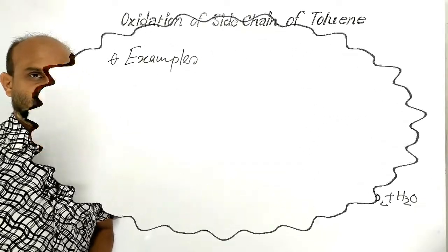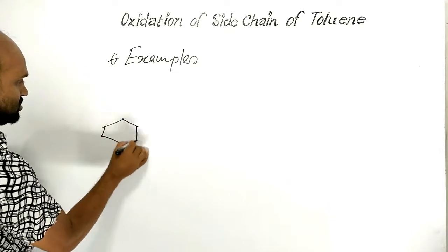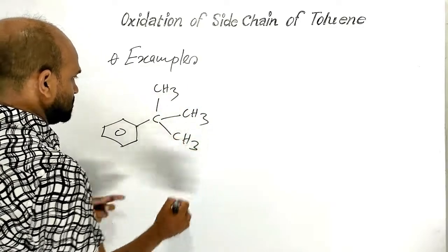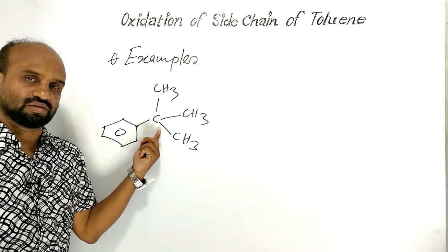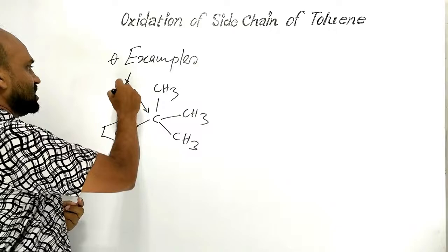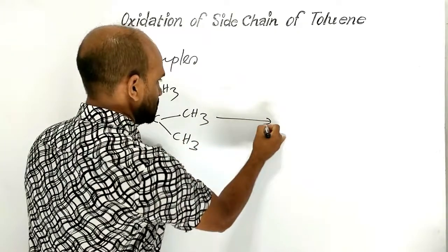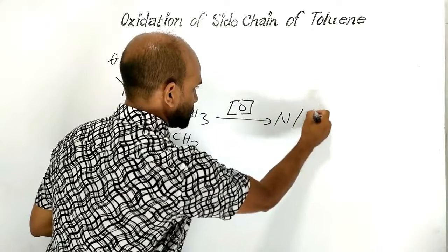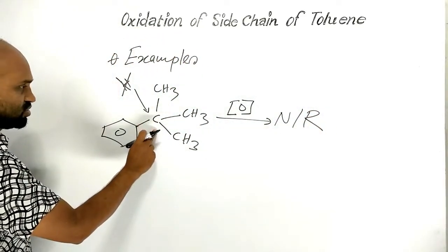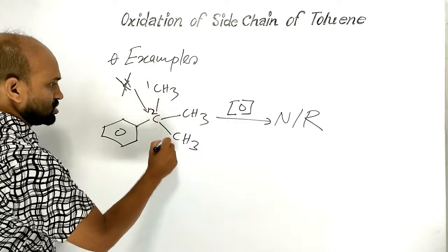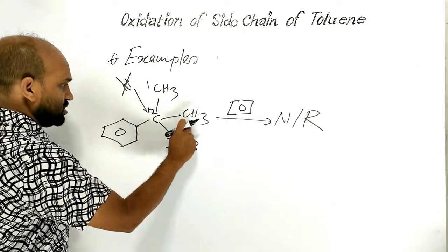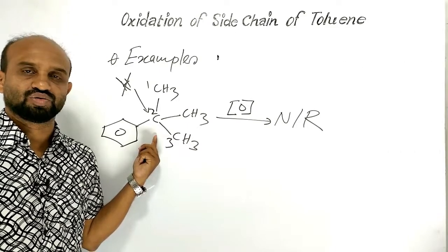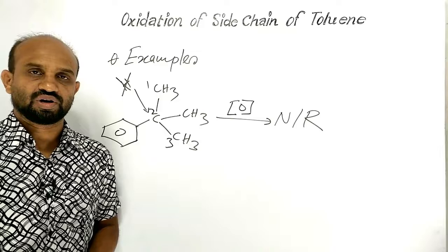Another example is 2-methyl-2-phenylpropane. This side chain contains no benzylic hydrogen atom. Therefore, this compound will not experience oxidation — no reaction will occur. 2-methyl-2-phenylpropane will not suffer an oxidation reaction.